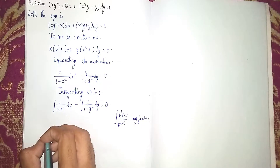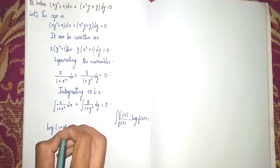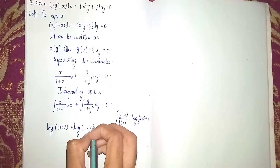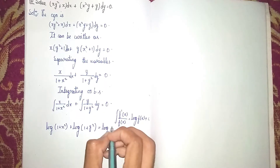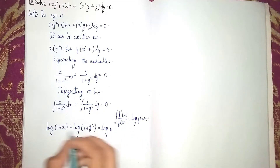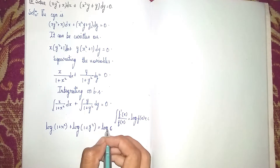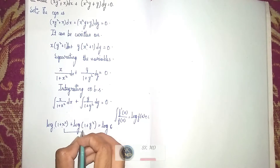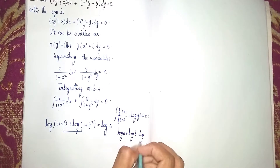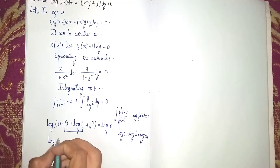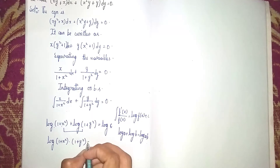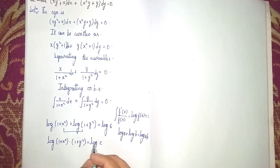Applying this formula, it becomes log(1 + x²) + log(1 + y²) = log c. Using the log property log a + log b = log(a·b), this becomes log[(1 + x²)(1 + y²)] = log c. The log terms cancel on both sides.